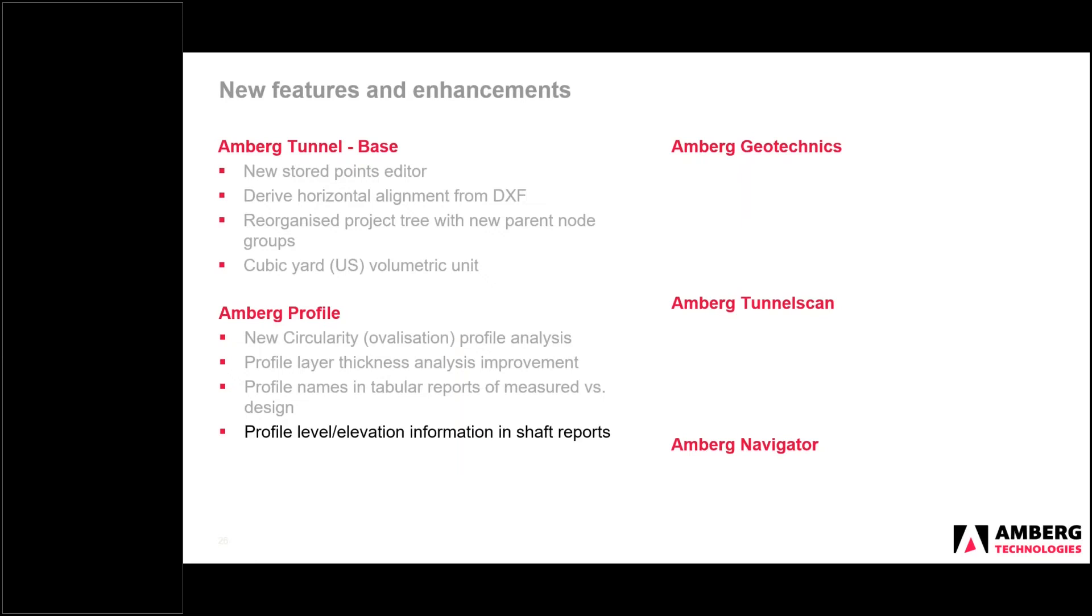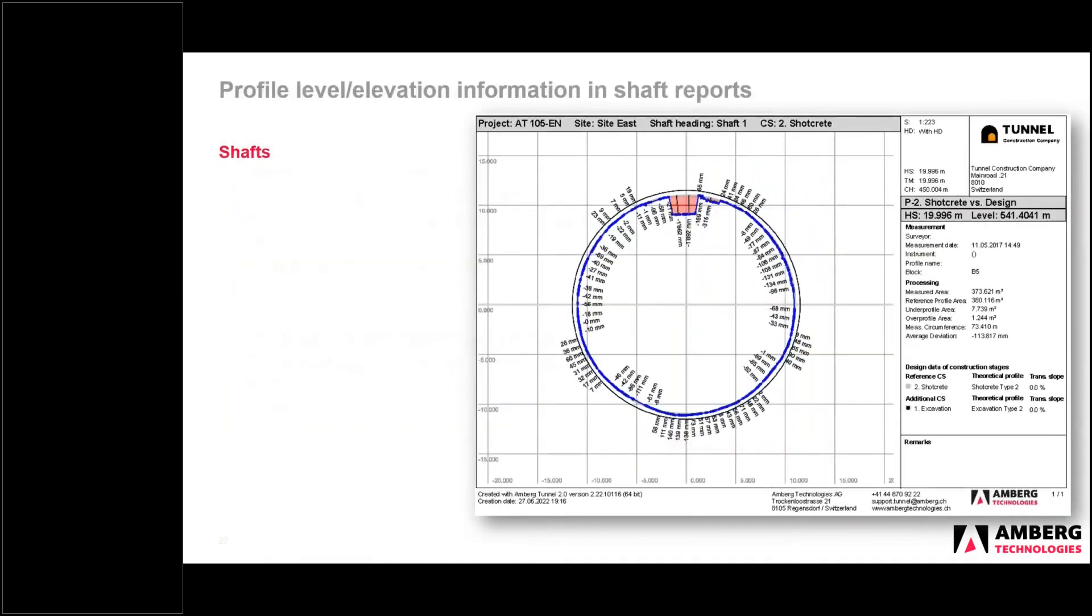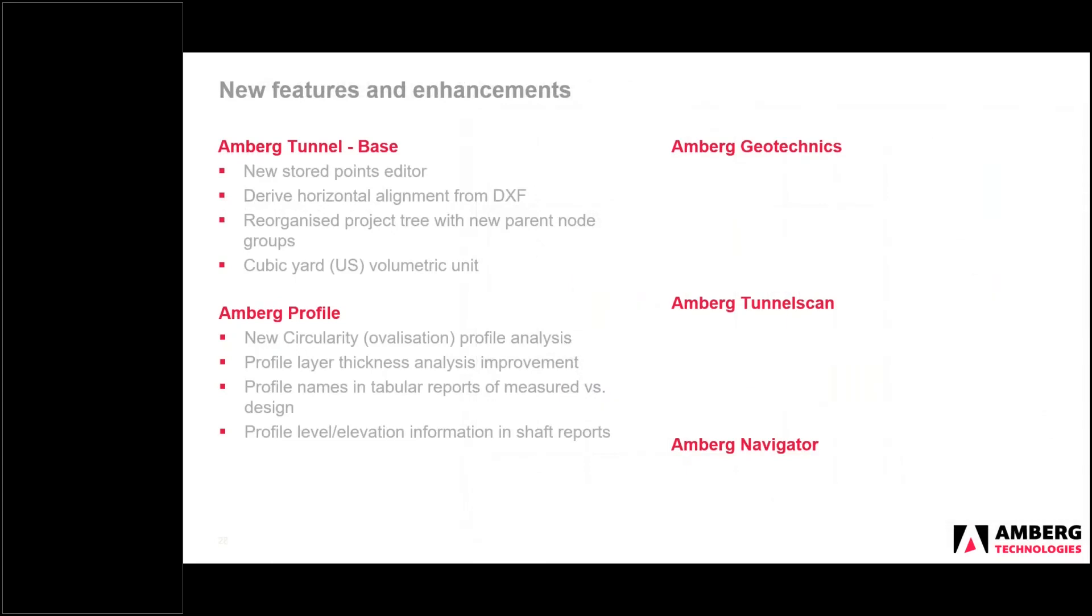And next we have for shafts, so for measured versus design for shafts, we have level information now displaying. So this is a shaft measured versus design report. So a shaft in Amberg Tunnel is a strictly vertical structure. So the starting axis, the easting and northing, and the ending axis, easting and northing values are identical. The only difference is the elevation. So we now have the level information of the profile showing in this report. For tubes, this information for obvious reasons is not there. The level information that's shown here is an average value of all the measured points that make up this profile.